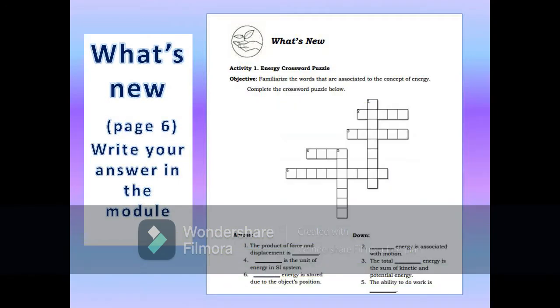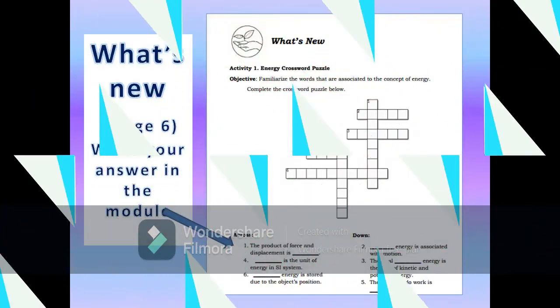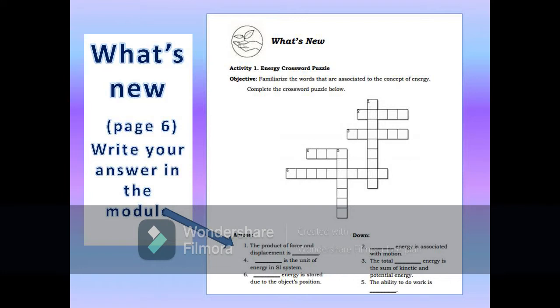Let's proceed to another part of the Module, which is What's New, Page 6. In this portion, the new lesson will be introduced to you in various ways, such as a story, a song, a problem opener, an activity, or a situation. In What's New, Activity 1: Energy Crossword Puzzle. The objective of this activity: familiarize the words that are associated to the concept of energy. Instead of putting your answer in the boxes, you put your answer before the number because there are boxes missing in the crossword puzzle. Ulitin ko, yung sagot nyo, isulat nyo na lang bago mag-number. Halimbawa, sa number 1, the product of force and displacement is, susulat yun bago mag-number 1.